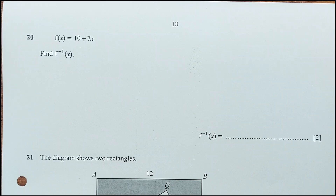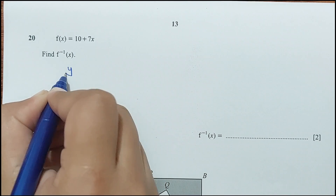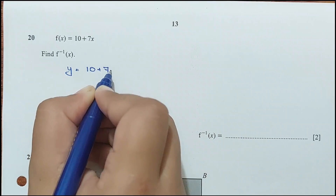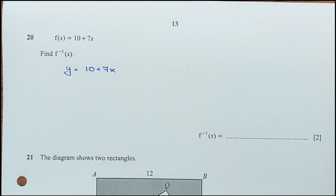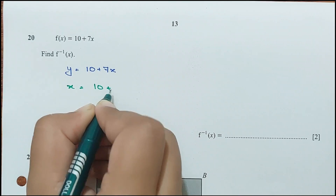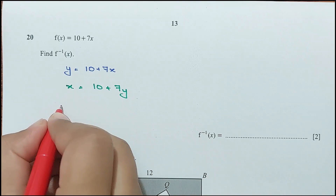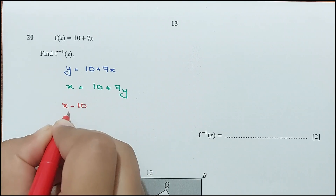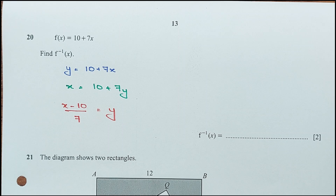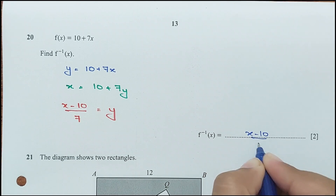Question 20: given f(x) = 10 + 7x, find f⁻¹(x). Let y = 10 + 7x, then switch variables: x = 10 + 7y. Solving for y: y = (x − 10)/7. So f⁻¹(x) = (x − 10)/7.